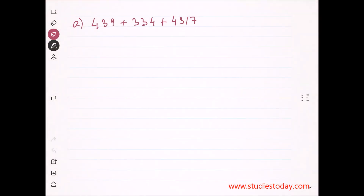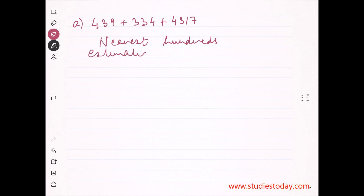The first question is 439 + 334 + 4317, round off to the nearest hundred. The rule of estimation is: first estimate, and then add.